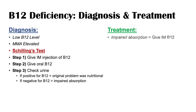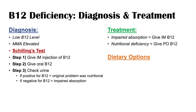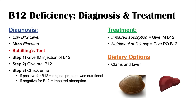Treatment of B12 deficiency depends on whether it was due to impaired absorption or nutritional deficiency. If it's impaired absorption, you'll give B12 by IM injection. If it was nutritional deficiency, you may be able to give oral B12 supplements. Two specific foods with extremely high levels of B12 are clams and liver.